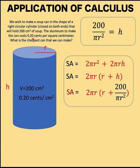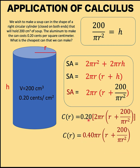The cost of that aluminum is 0.20 cents per square centimeter. So let's multiply the surface area by 0.20 to get our cost function in terms of the variable r or the radius. We would like to find what radius can give us the cheapest possible can. Let's simplify by multiplying 0.20 times 2πr.